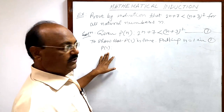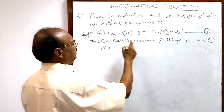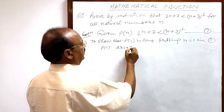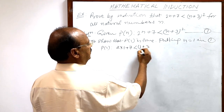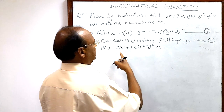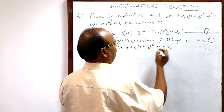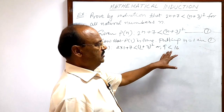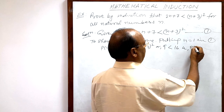Putting n=1 in relation number 1, the statement becomes 2×1 + 7 is smaller than (1+3)², which gives us 2 + 7 = 9 is smaller than 4² = 16. This is true, so P(1) is true. The first step is complete.